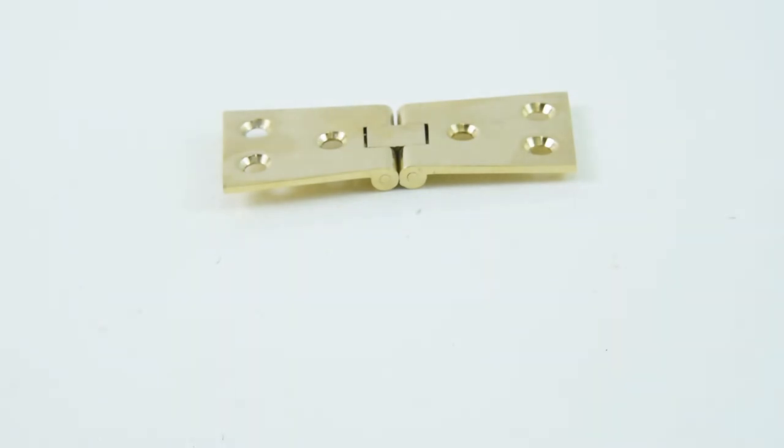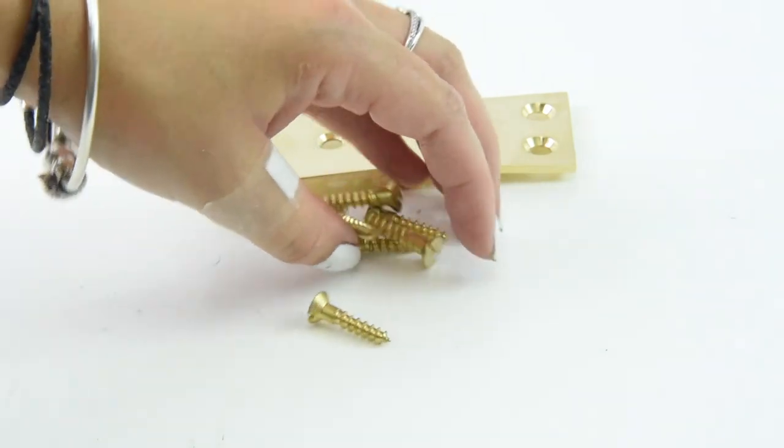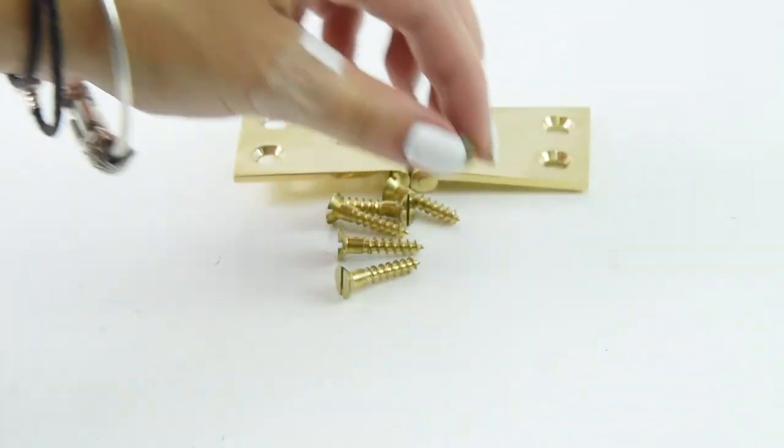Now Croft provides you with all screws for it, so because it's got six fixing centers, you'll get your six screws, and they come in the matching finish of your choice. Because this one's brass, it comes with brass screws.